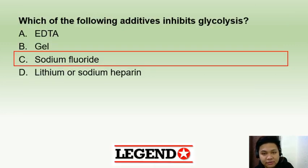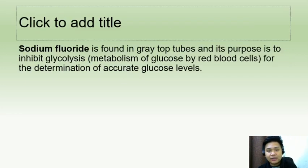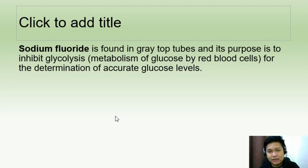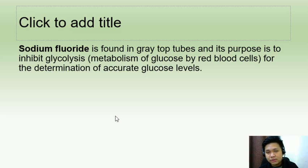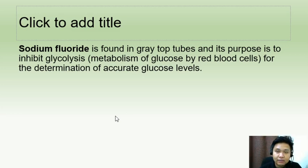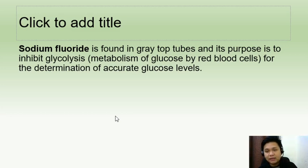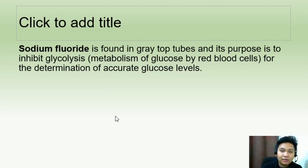Which of the following additives inhibits glycolysis? The answer is sodium fluoride, found in gray top tubes. Contrary to what most people know, sodium fluoride is not an anticoagulant — its primary use is as an anti-glycolytic agent. Sodium fluoride binds to magnesium ions needed by the enzyme enolase, thereby inhibiting enolase, which is part of the glycolytic pathway.